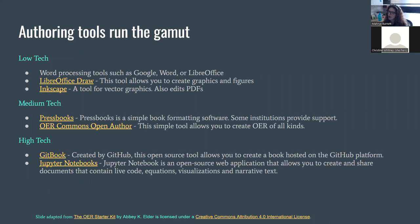This slide, borrowed and edited from Abby Elder's OER Starter Kit, shows some examples of authoring tools — not an exhaustive list. On the low-tech end, you can consider tools like Google Docs, Microsoft Word, or LibreOffice as OER authoring tools. Many people who author OER start by creating their entire manuscript in Microsoft Word and then move it to another platform. As long as you make your work publicly available in a format most people can access, a word processor can work.